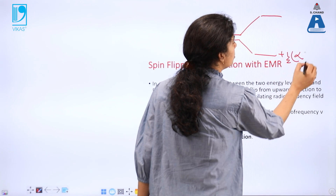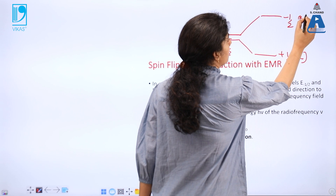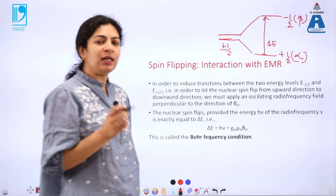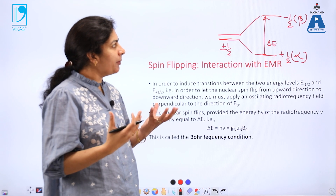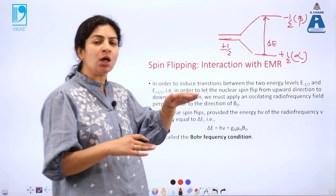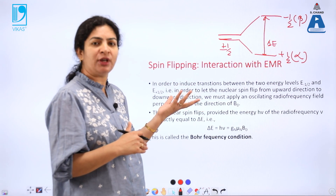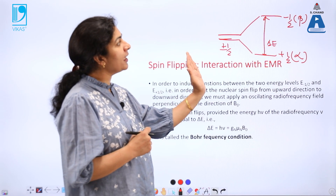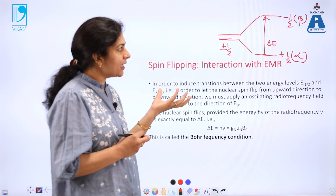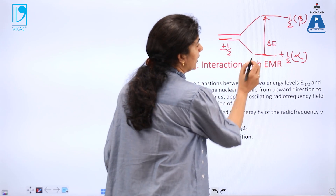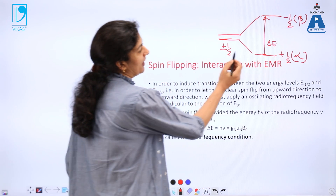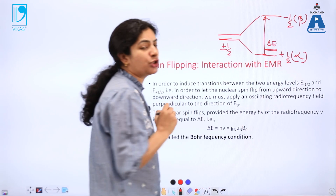Once you have these two different energy levels there is an energy gap. As we know, in every branch of spectroscopy there is interaction with electromagnetic radiation. Up to now we had not discussed the role of electromagnetic radiation — that was only with the involvement of the external magnetic field. Now comes the role of electromagnetic radiation, which will come from the region whose energy exactly matches this energy gap.